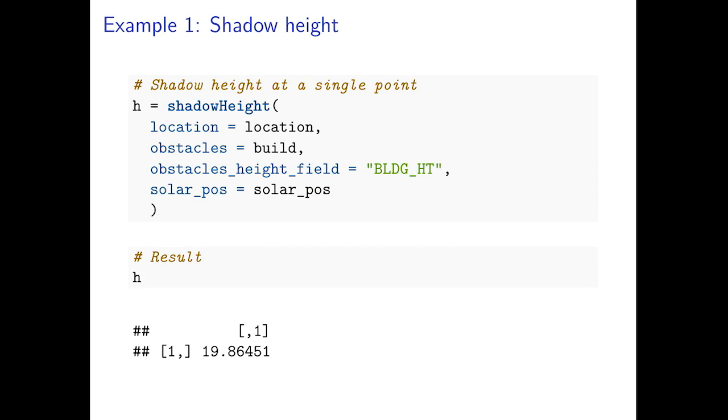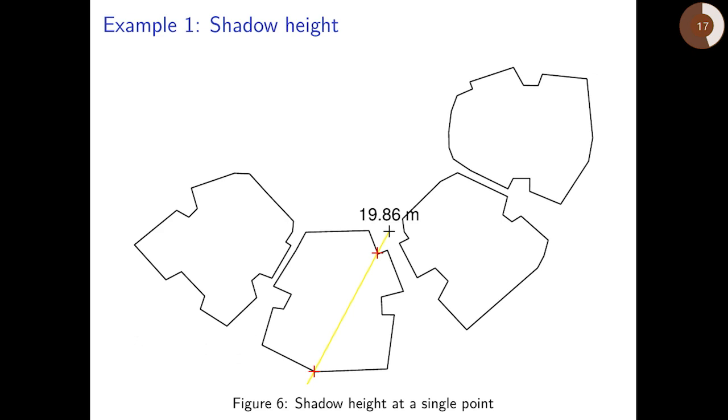Now we can use function shadowHeight with the four parameters: the queried location is the layer with the single point, the obstacles layer are the buildings, the name of the height field is building_height, and the sun position. The result is a numeric matrix. In this case it has one row and one column since we had one point in time and one point in space, and the value is 19.86 meters.